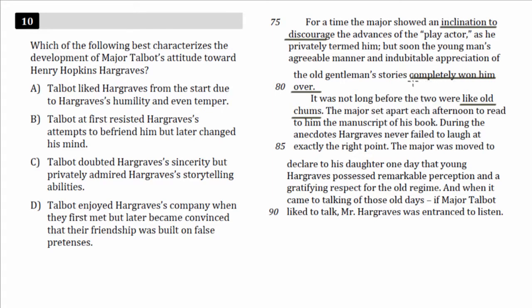So this kind of goes on — really, it comes down to: first inclined to discourage advances, wasn't a big fan, but then Hargraves completely won him over and they became really good friends. That's our answer. Notice how we're following the steps: read the question, ignore the answer choices, refer to the passage to find the answer, and now we come back to the answer choices and focus on poking holes through the wrong ones.